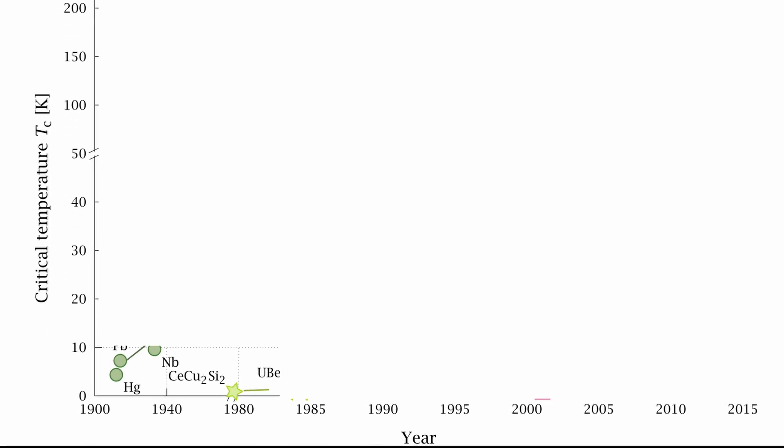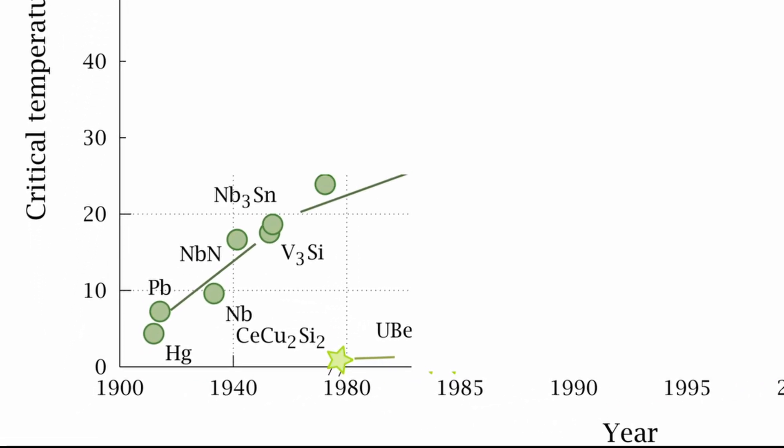So now you know how superconductors work. Or do you? The theory I told you is currently accepted. However, it only works for some superconductors. With this theory, you can reach critical temperatures up to around 30 Kelvin.